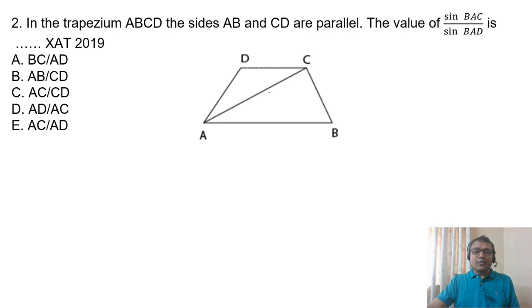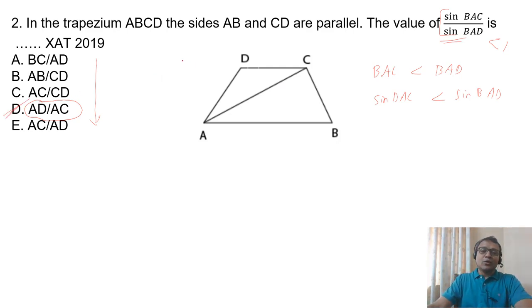Let's look at one more. The box sine BAC upon sine BAD. If you notice, angle BAC is smaller than angle BAD. So sine BAC has to be smaller than sine BAD. If it's smaller, this ratio has to be less than 1. Look at the options where the numerator is smaller than the denominator. Only D option has numerator less than denominator. AD is smaller than AC. So D is the answer.